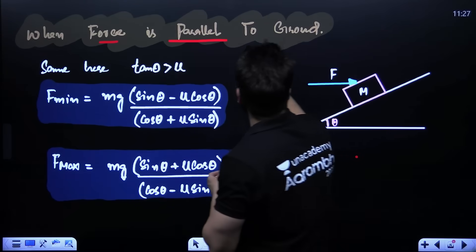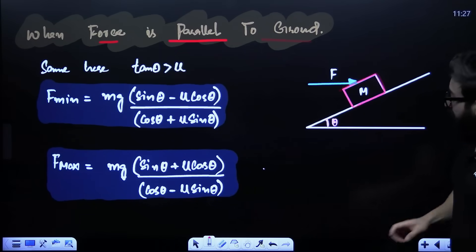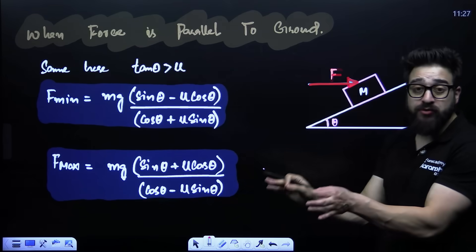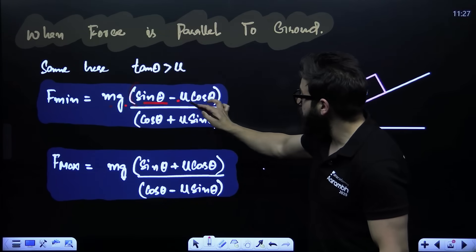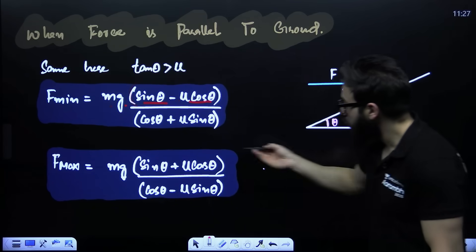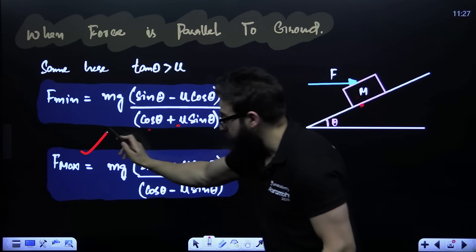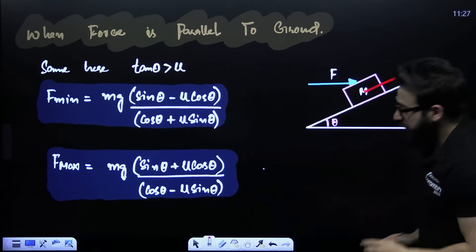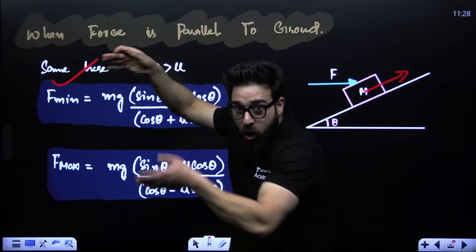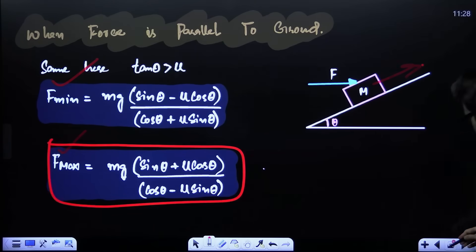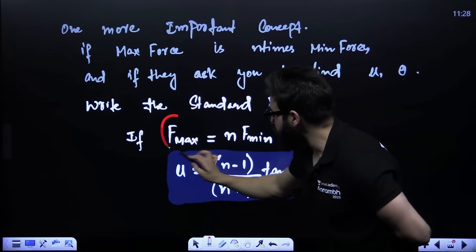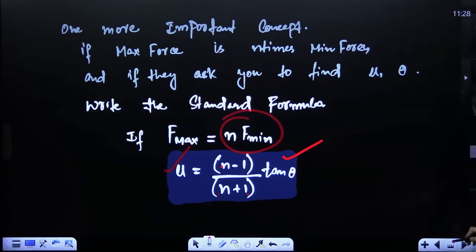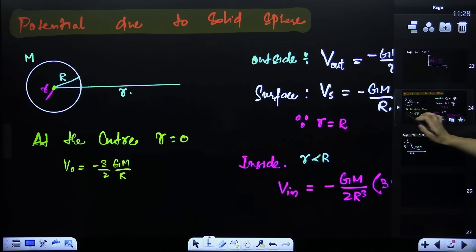When a force is applied parallel to the ground on a block on an inclined plane: minimum force to prevent sliding down = mg(sin θ − μcos θ)/(cos θ + μsin θ). Maximum force before the block slides upward = mg(sin θ + μcos θ)/(cos θ − μsin θ). If F_max = n × F_min, then μ = (n − 1)/((n + 1) × tan θ).